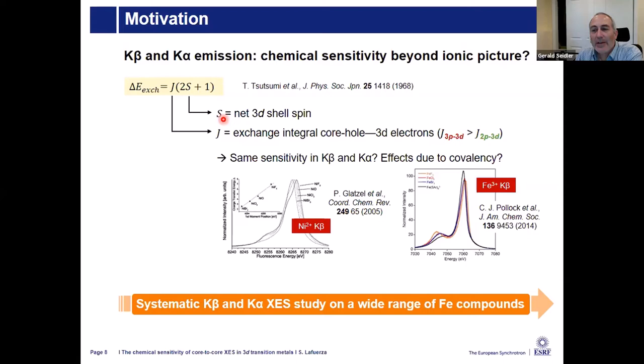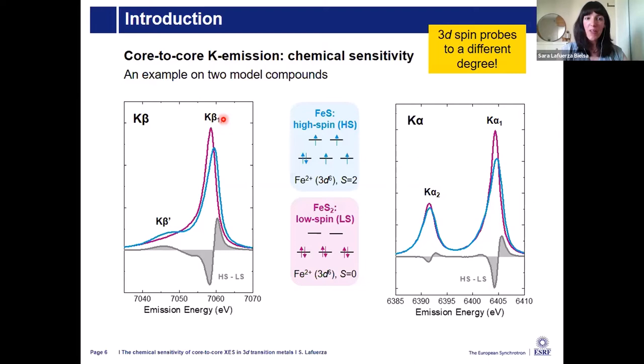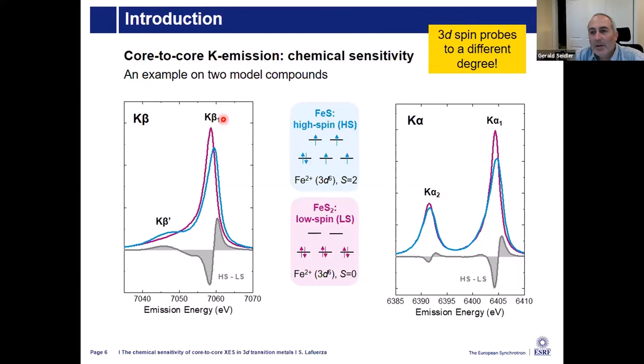Regarding the FeS2 low-spin K-beta prime peak: from the simple Tsutsumi model, because the sample is nominally spin zero, in principle there should be no splitting. However, there are other effects shaping the lines beyond the 3P-3D exchange interaction — other multiplets may contribute — so there is still some residual intensity, rather than a complete absence of a peak.